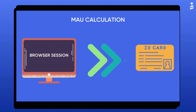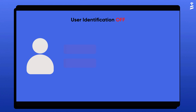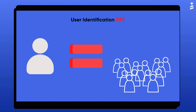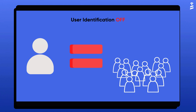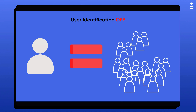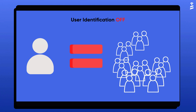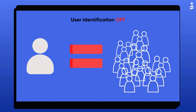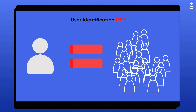Even if you don't have any active material, if you have installed UserGuiding on your platform, MAUs will be calculated automatically. The default method of counting monthly users is based on the browser's local storage. The container code installed on your platform recognizes unique browser sessions and creates unique user IDs for them.